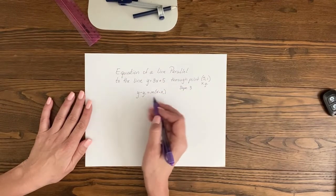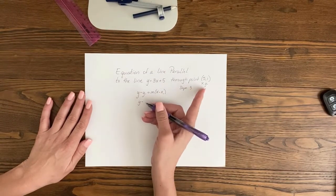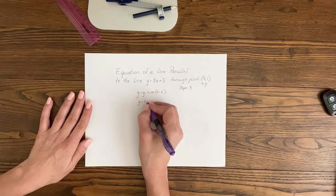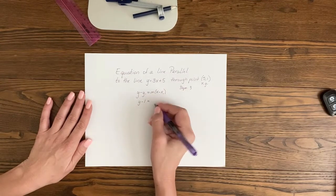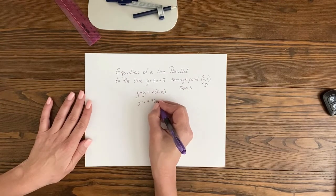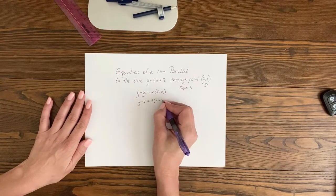And I have to plug in my numbers, so y minus y1, which is 1, equals our slope 3 times x minus x1, which is 5.